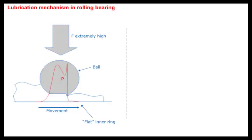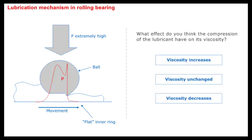Lubrication mechanism in rolling bearings is slightly different from plain bearings. Consider what happens in a ball bearing when a ball reaches the load zone. Both the element and the race get deformed, creating an elliptical area of contact. As the surface is flattened, a high pressure zone is created where the lubricant is compressed. What effect do you think this compression has on the viscosity of the lubricant?